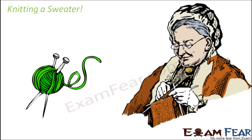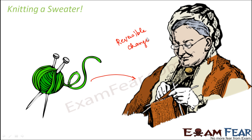Think of knitting a sweater — like your granny or your mom would have knitted a sweater using wool. Once the sweater is knitted, you get a sweater you can wear. Is this a reversible or irreversible change? It is definitely a reversible change, because we can still get back the wool from the sweater. You just pull out a thread and keep pulling — you can get the entire wool back from the sweater.